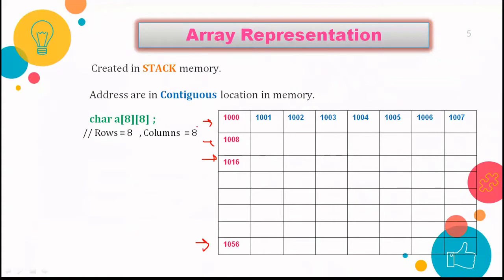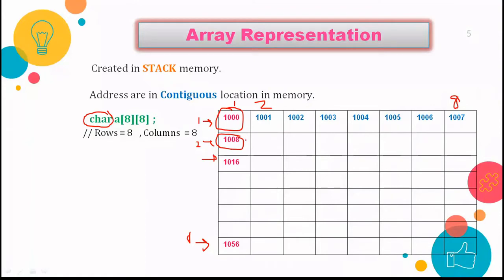Let's say the base address given to the first location is 1000. In Turbo C compiler, characters take one byte. Because we have eight columns here, one byte for every column means the whole row is taking eight bytes. So 1000 plus eight will be the next address, pointing to the next row.